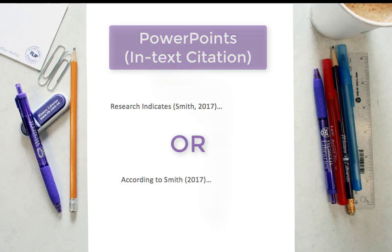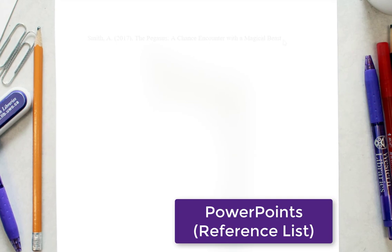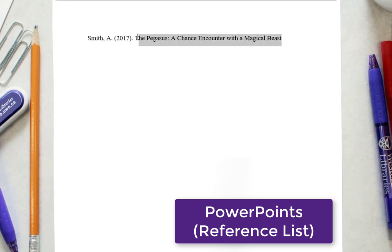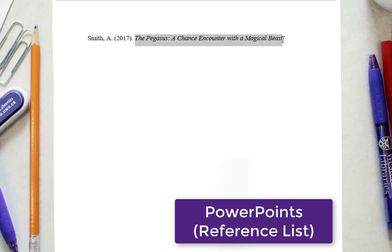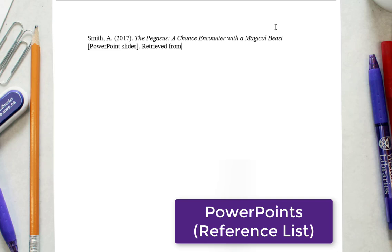For your reference list, the author's last name will be listed first, followed by their first name. The year of creation will be listed in brackets, and lastly, the name of the lecture should appear in italics. Be sure to provide the file format in brackets after the lecture title — for example, PowerPoint slides or Word document. If the resource was online and retrieved from a website, list the URL.